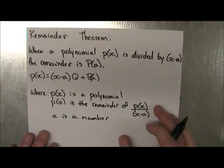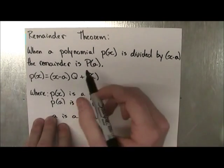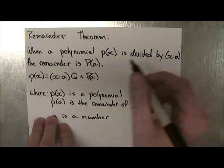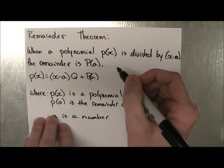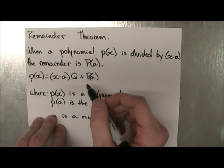So the remainder theorem actually pretty much just states what we just saw. And it says when a polynomial p(x) is divided by x minus a, the remainder is p(a). And p(x) can be written as (x - a) times q plus p(a).